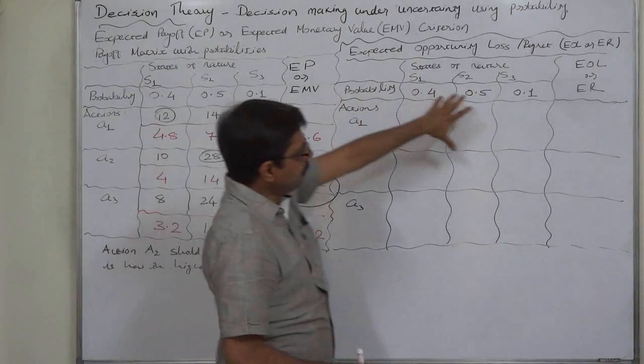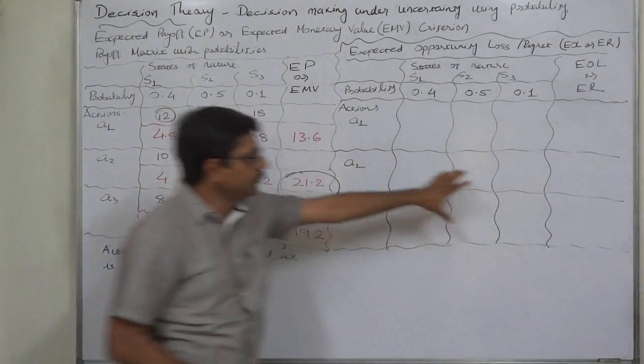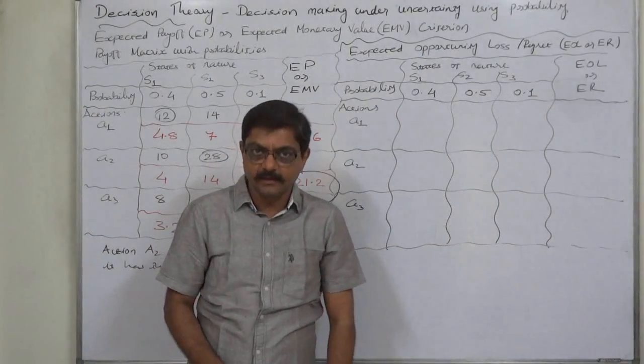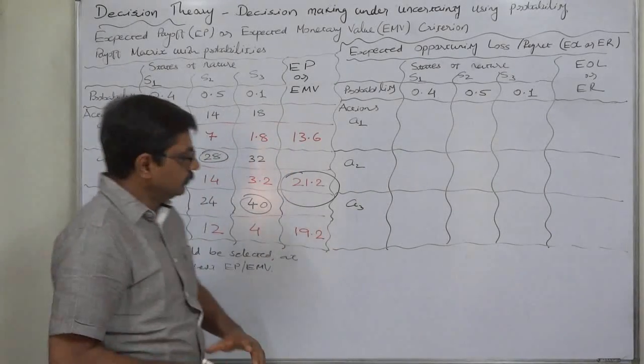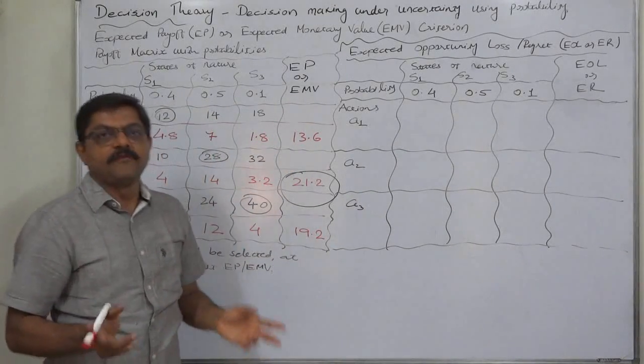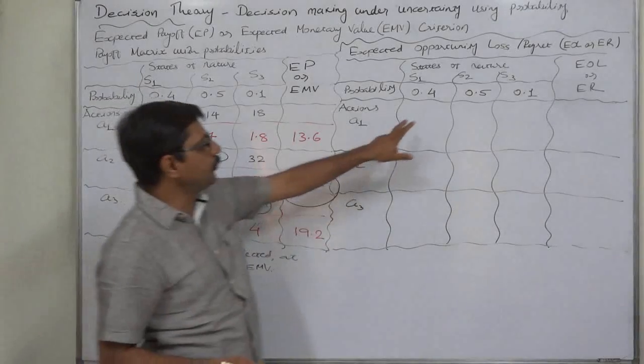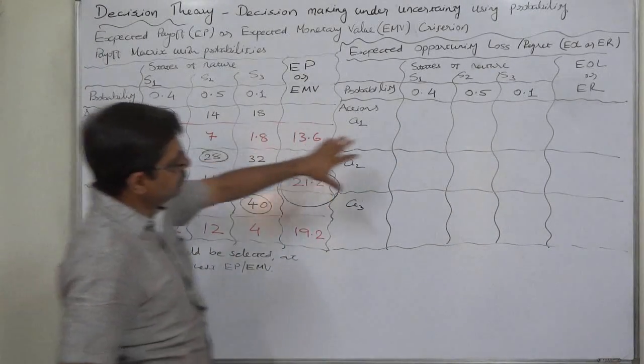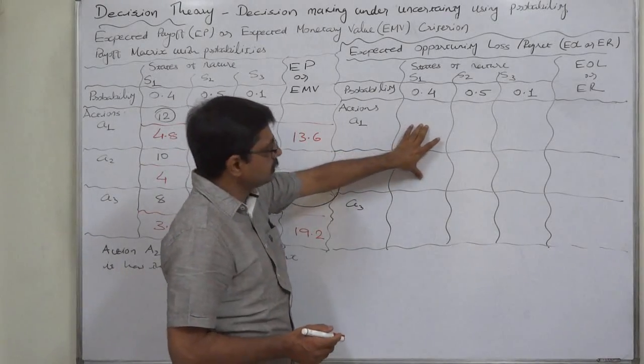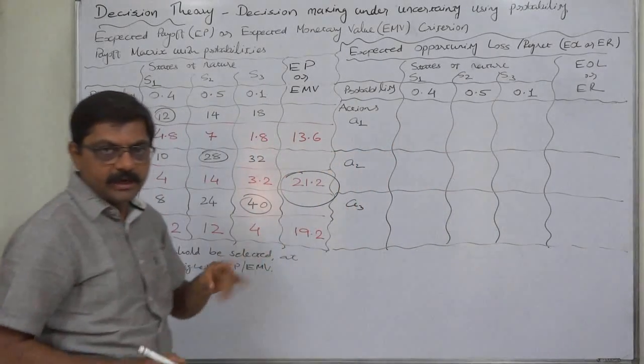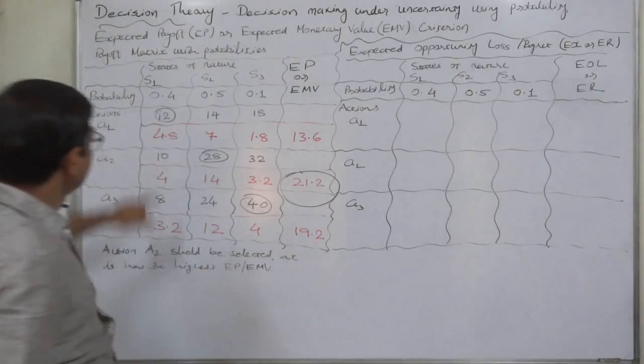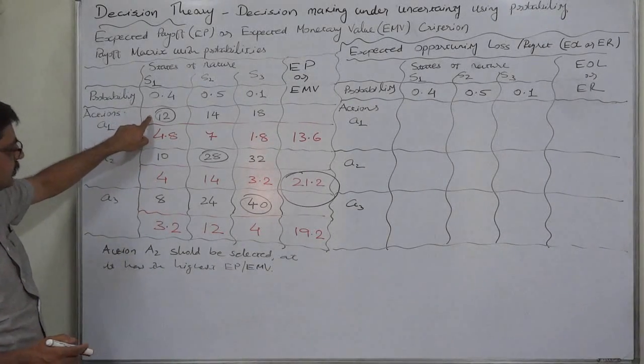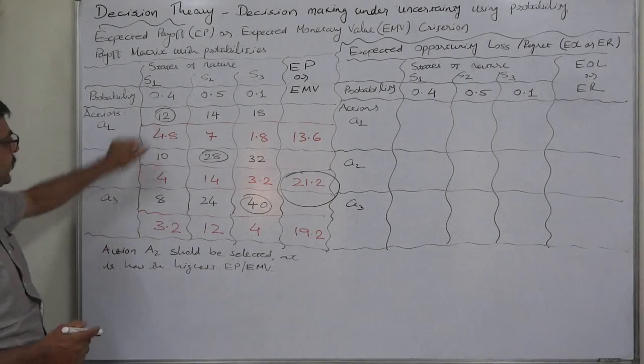The probability can also be used to find out the expected opportunity loss or expected regret. The process is almost the same, but first we have to find out the opportunity loss or regret. In case of payoff, the opportunity loss can be calculated by selecting the highest payoff of the state of nature and subtracting all the payoffs from it.